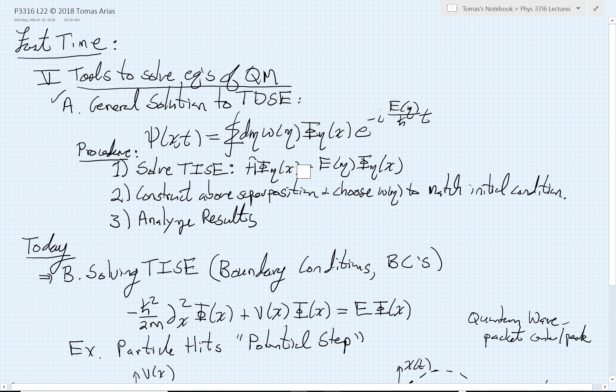Once we have those solutions, we construct the superposition, and then we choose these weights to match our initial condition. In the free particle example, that initial condition was an incoming wave packet. Once we have the full solution written down, we use our quantum kinematic framework to analyze the results.